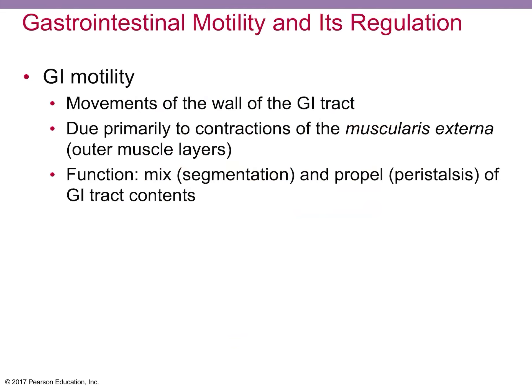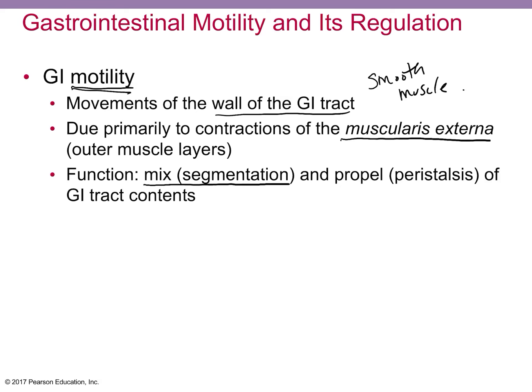Motility means what the walls of the GI tract are doing — this is smooth muscle, primarily the muscularis externa, which has an outer longitudinal and inner circular layer. In the intestines and stomach we have mixing — called segmentation — and movement of food through — called peristalsis — to propel food from point A to point B. Peristalsis begins at the esophagus and ends in the colon. Segmentation mixes the material in the small intestine to expose food to the enzymes on the brush border and to maximize nutrient absorption.